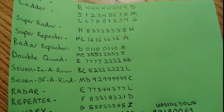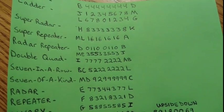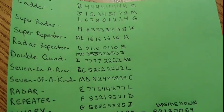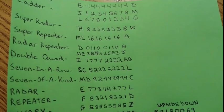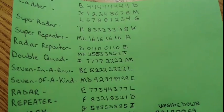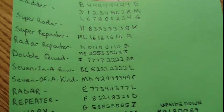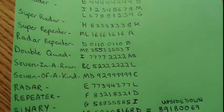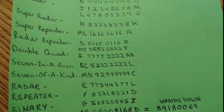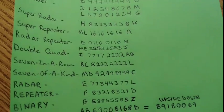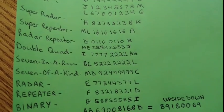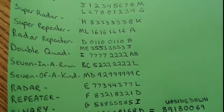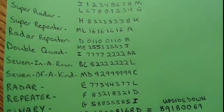Then we have a super radar, which is something like 8, 3, 3, 3, 3, 3, 3, 3, 8 — it reads the same backwards as forwards. Then we have the super repeater, for example 16, 16, 16, 16 — it shows the same number four times in a row.